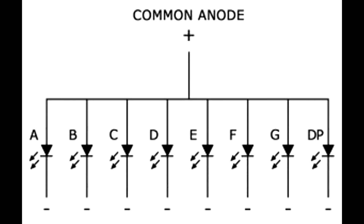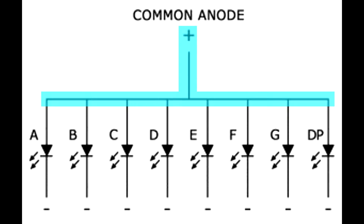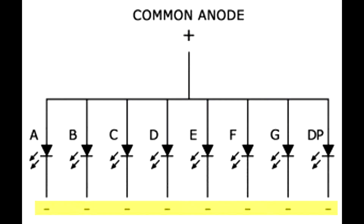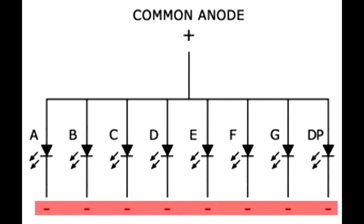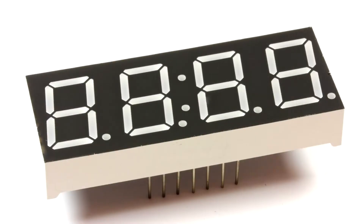In common anode displays, all of the anodes are connected to VCC. Individual segments are turned on and off by switching power to the cathodes. But in this project we will use common cathode segment display.